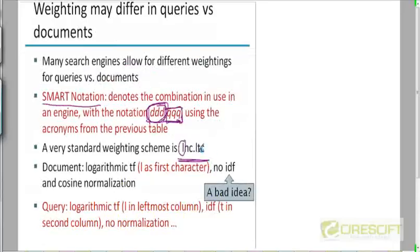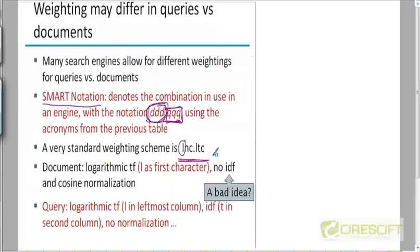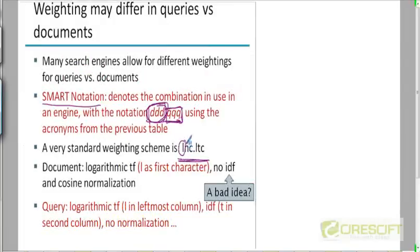Whereas for the query vector, I will use the L scheme for term frequency, I will use the T scheme for document frequency. And by the way, this N indicates one. So this is a scheme where you are not using IDF weights at all for documents.